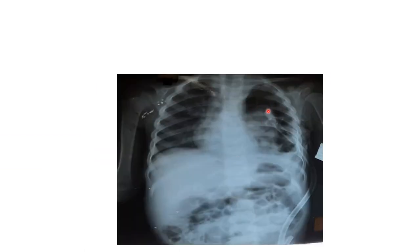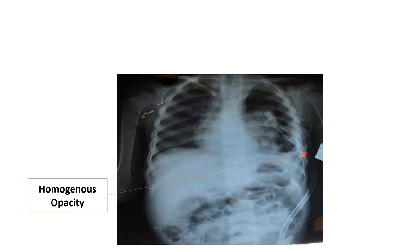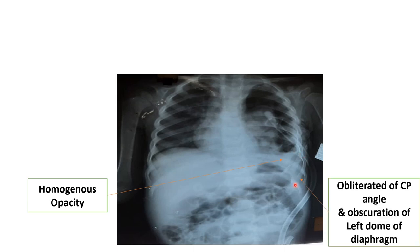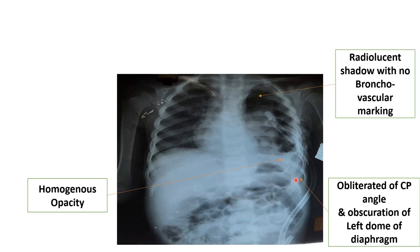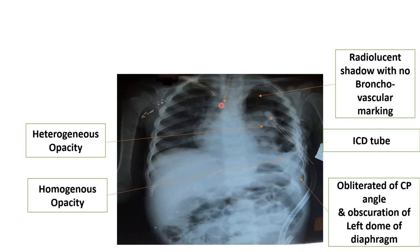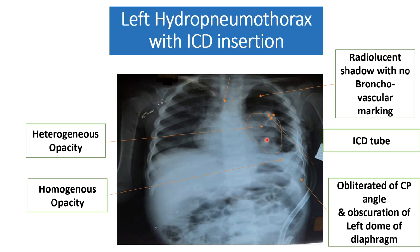This is the x-ray of a child where ICD is clearly inserted. The CP angle is obliterated, there is a radiolucent shadow in the left upper part, homogeneous opacity in the left lower part, and an air-fluid level is visible — so the patient has left-sided hydropneumothorax. There is also obscuration of the left dome of the diaphragm and trachea is shifted toward the right side. The heterogeneous opacity represents the collapsed left lung. The diagnosis is left-sided hydropneumothorax with ICD insertion.